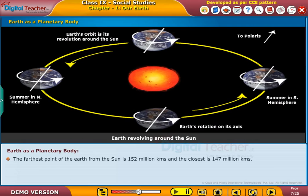The farthest point of the Earth from the sun is 152 million km and the closest is 147 million km.